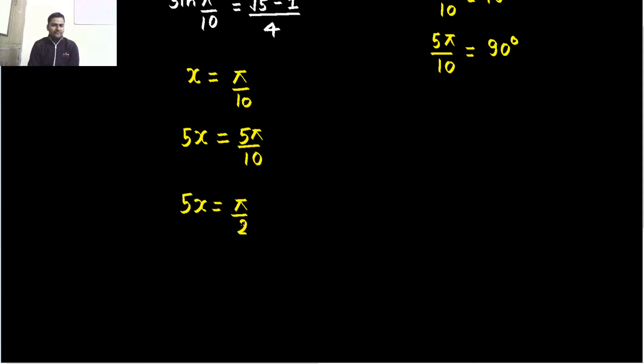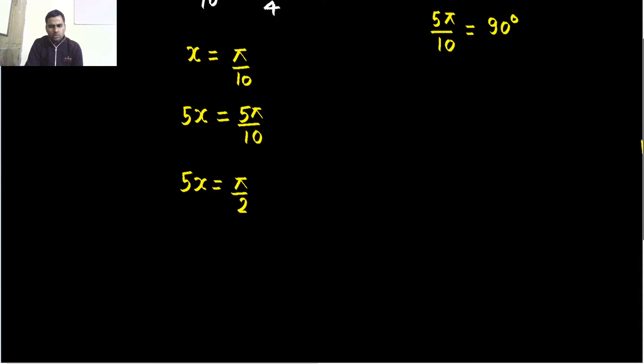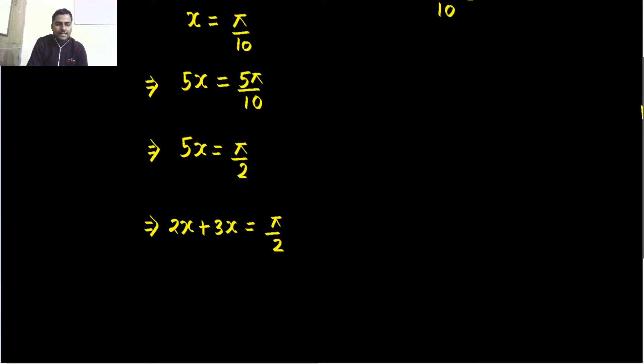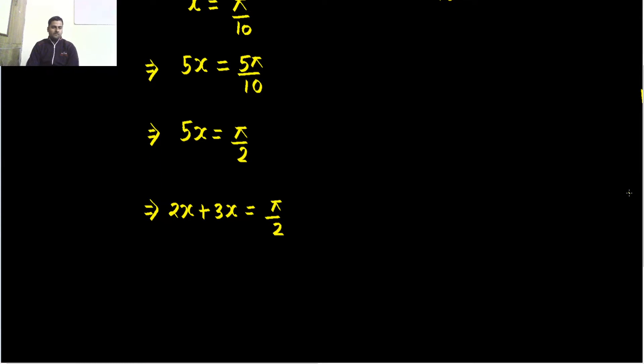Now, this 5 times of x can further be broken as 2 times x plus 3 times x equals to pi by 2. Now, what I can do? So, if I let this 2x remain this side and send that 3x to the other side, why I have done this? Let's see.